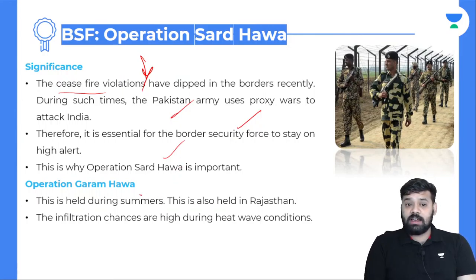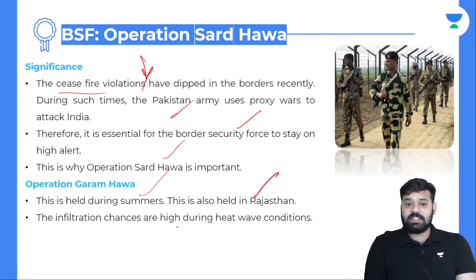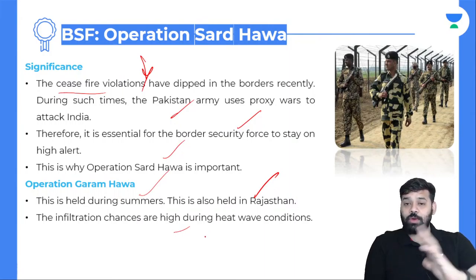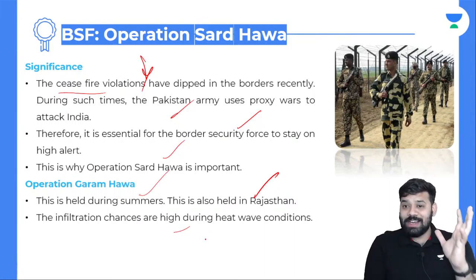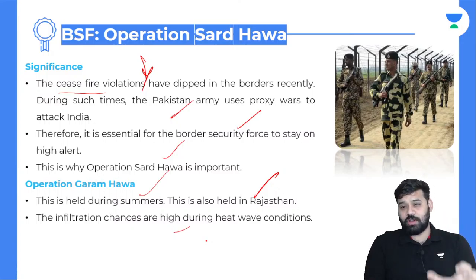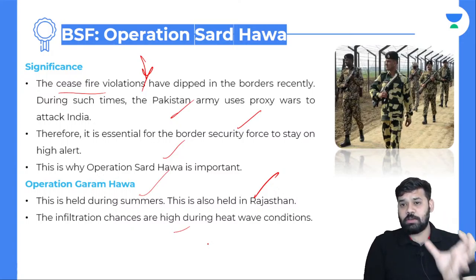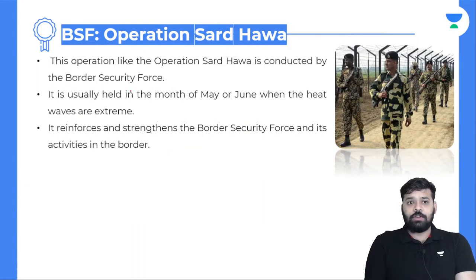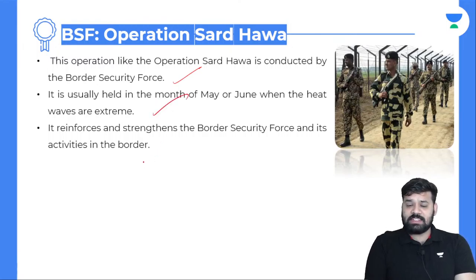Operation Garmawaj is held during the summer in Rajasthan. The infiltration chances are high during heat wave conditions — apart from cold weather, there is also extreme heat. BSF functions in extreme weather conditions. Operation Garmawaj is usually held in May or June, when heat waves are extreme, to reinforce and strengthen BSF activities at the border.